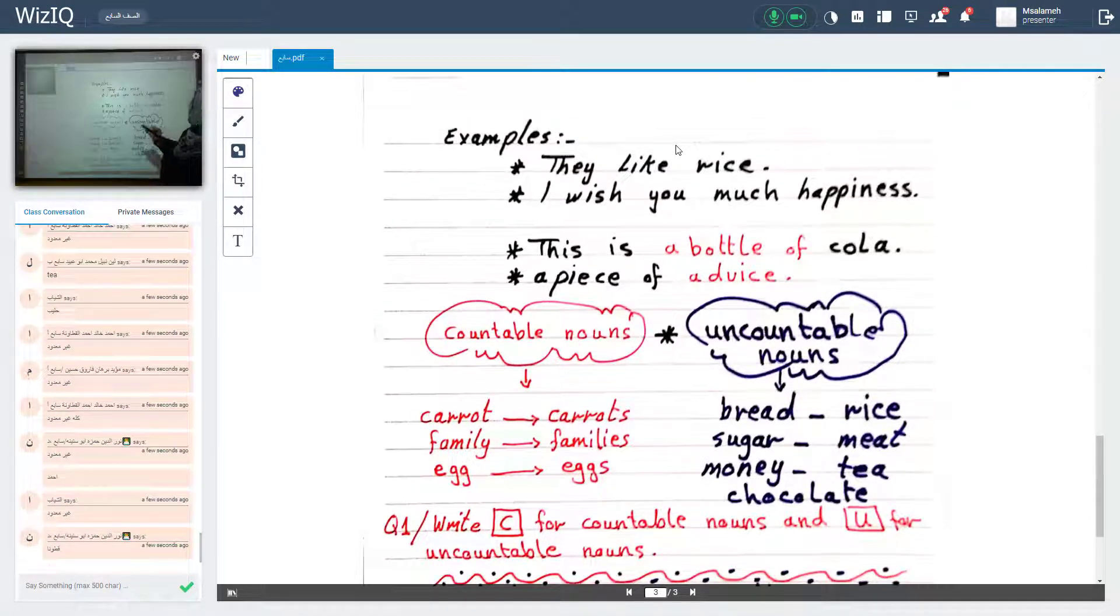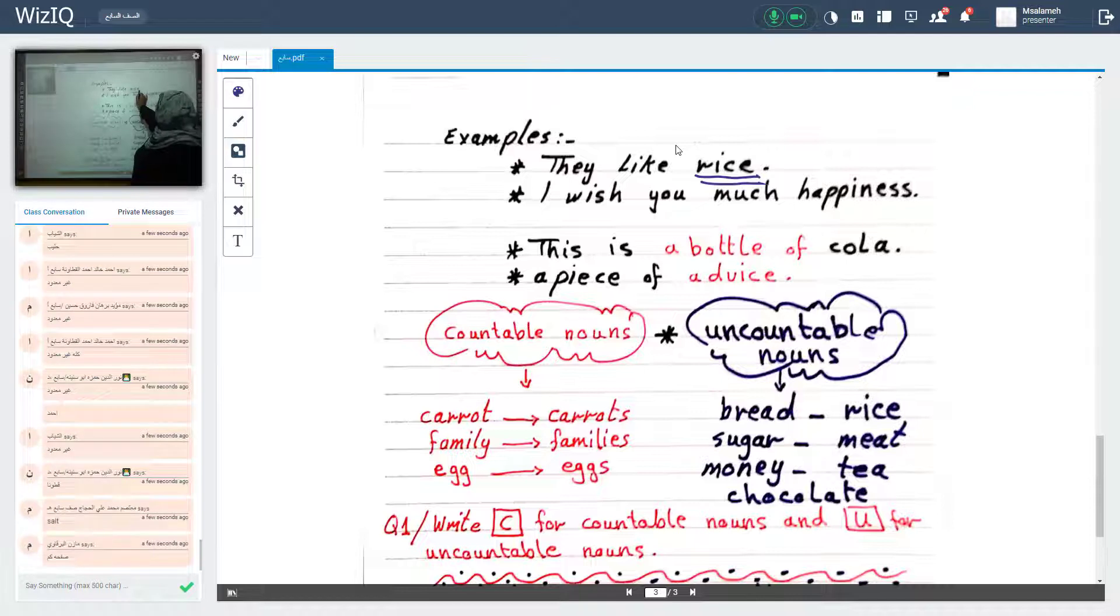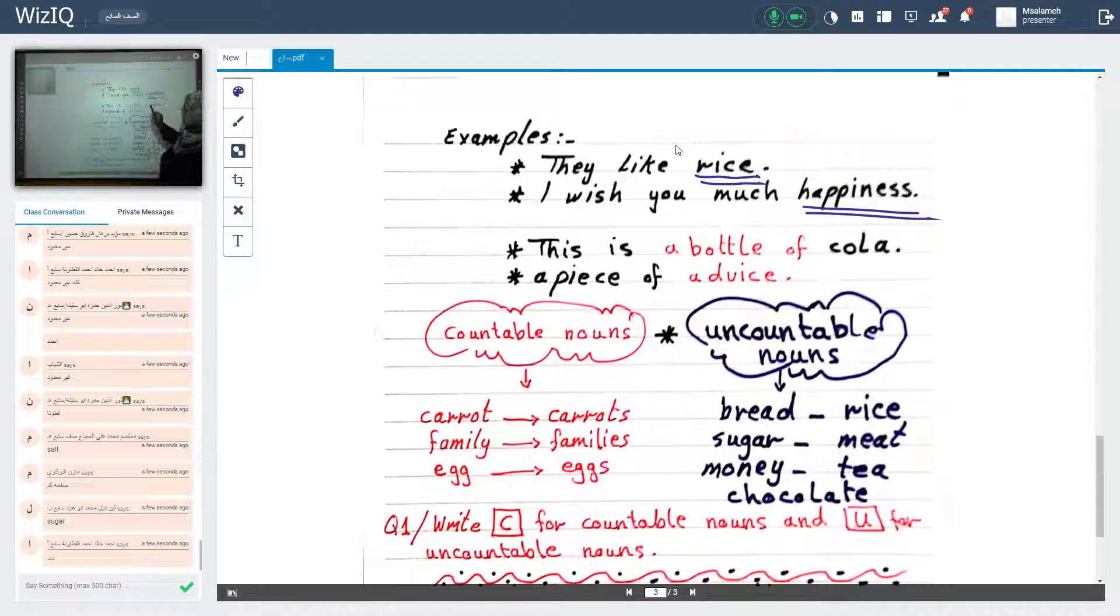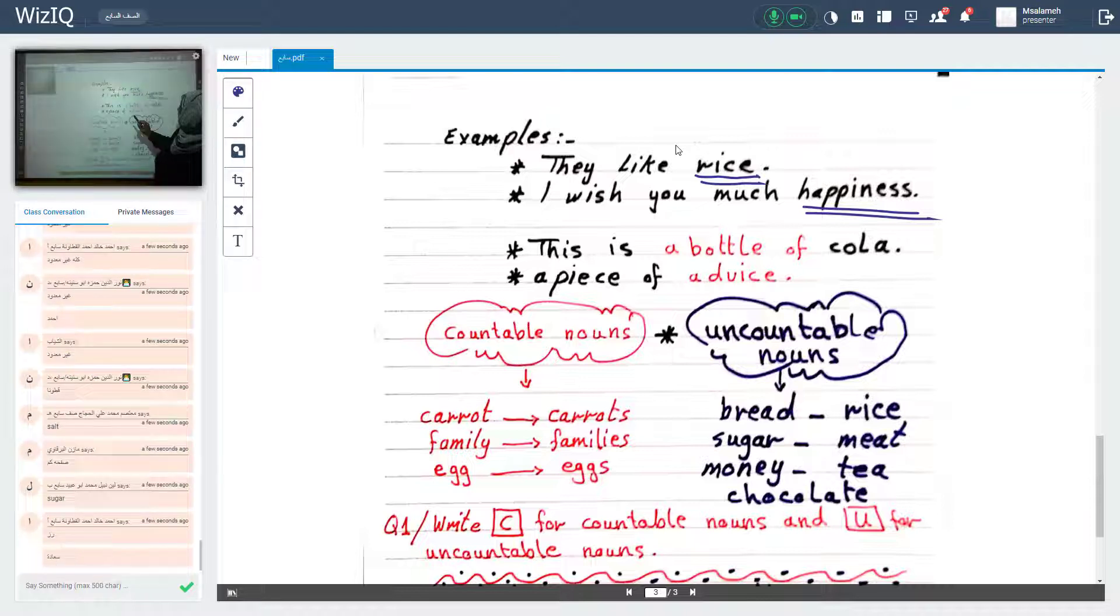Example, they like rice. Rice, uncountable. I wish you much happiness. Happiness, uncountable. Is it clear?